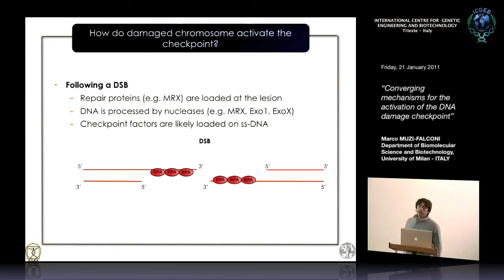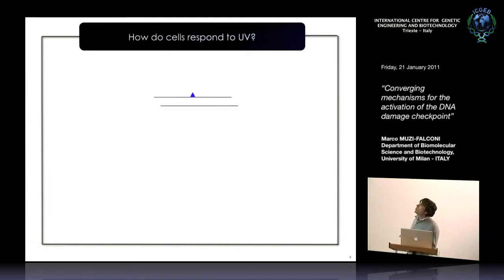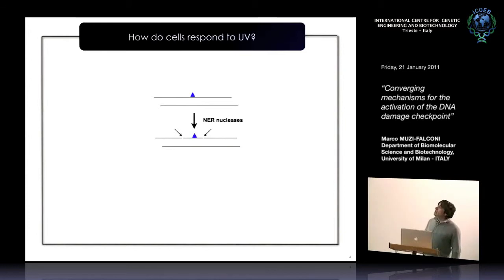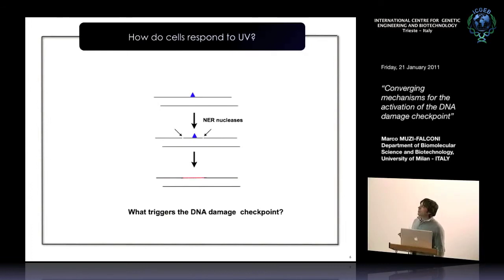We started wondering what's going on with UV lesions — what happens at UV lesion sites. In mammalian cells, UV lesions are removed by nucleotide excision repair, the only repair pathway that can take care of UV lesions. Nucleotide excision repair finds the lesion, makes an incision upstream and downstream of the lesion on one strand only, releasing a damaged oligo about 30 nucleotides in length, and the gap is refilled by DNA polymerases. This is a quite rapid and very efficient process.